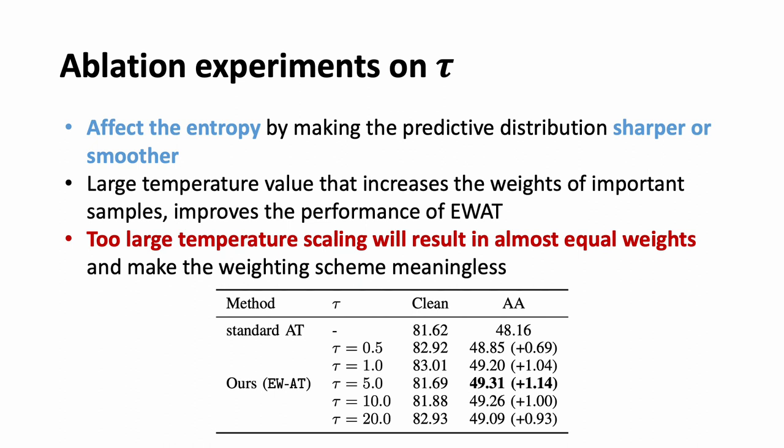We also conducted experiments on the hyperparameter tau, which affects the smoothness of the entropy. As seen in the table, an appropriate value of tau increases the weights assigned to crucial samples, resulting in improved robustness. However, if tau is set too high, the weights will become equal across all examples, and eventually the reweighting method could become ineffective.